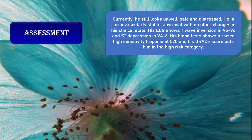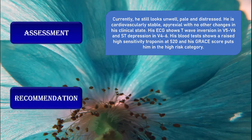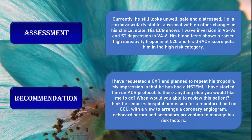His ECG shows T-wave inversion in V5 to V6 and ST depression in V4 to V6. His blood test showed a raised high-sensitivity troponin at 520, and his GRACE score puts him in the high-risk category. I have requested a chest X-ray and plan to repeat his troponin as well.